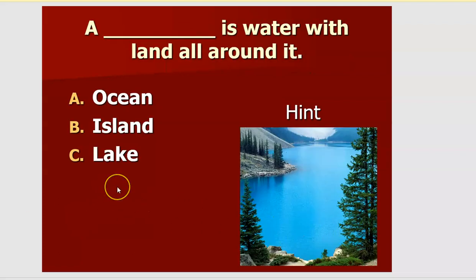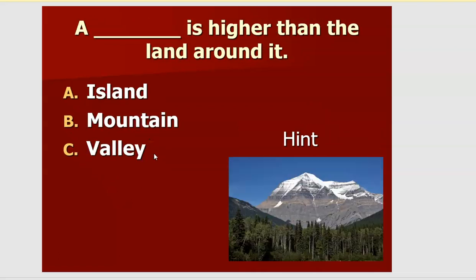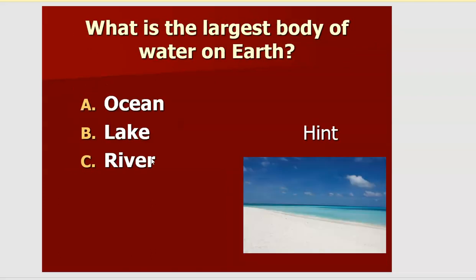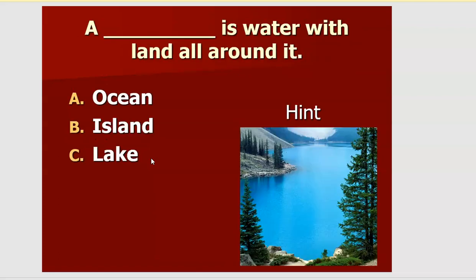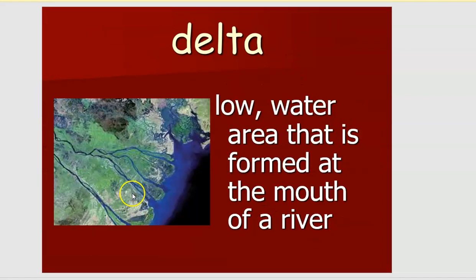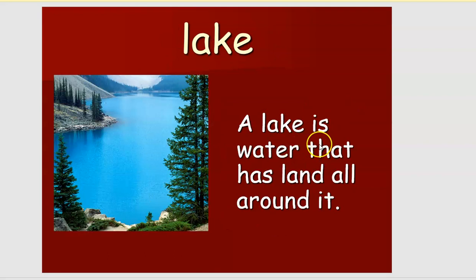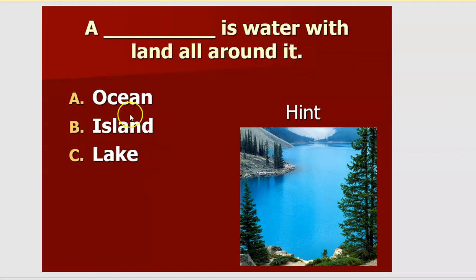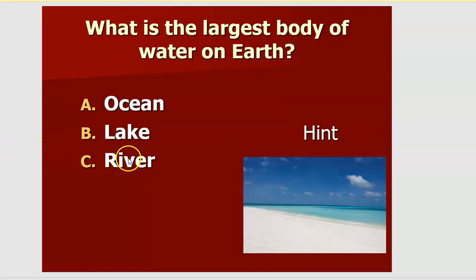If you have learned this properly, you can answer these questions. First question: blank is water with land all around it — what is it? Let us review: a lake is water that has land all around it. So the answer is lake. Next question: what is the largest body of water on earth? The answer is the ocean.